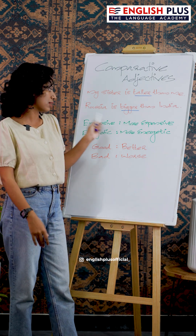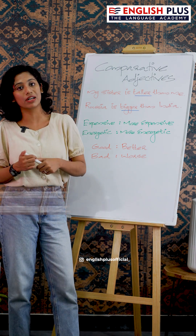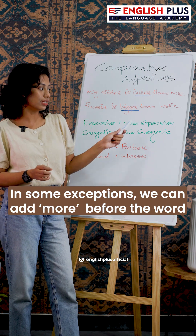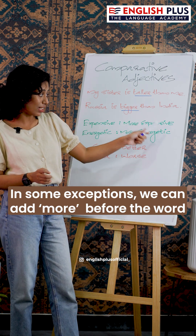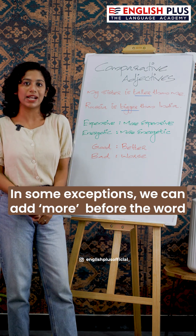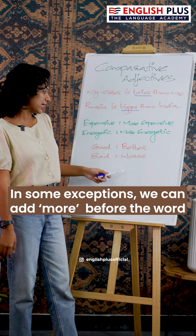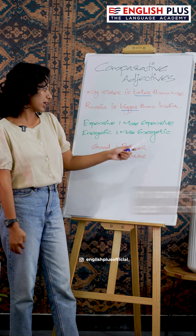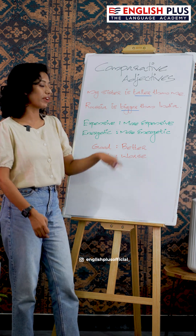In most cases, you can add -er to a word to form the comparative adjective. However, for longer words like 'expensive,' you add 'more' instead — for example, 'more expensive.' There are also some exceptional cases.